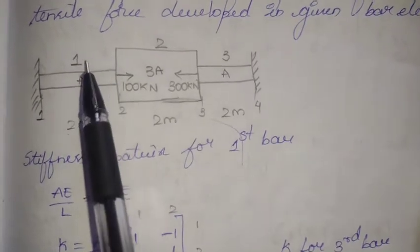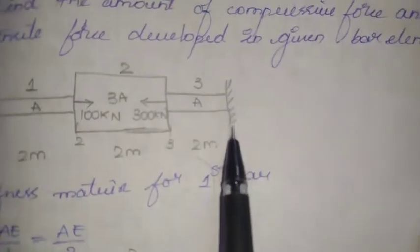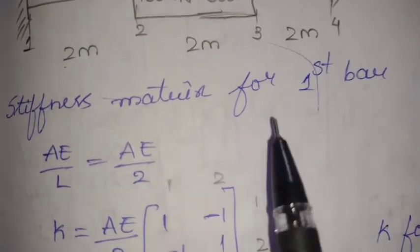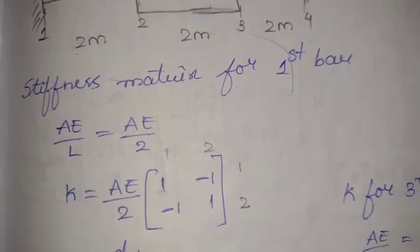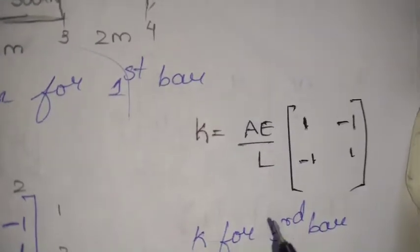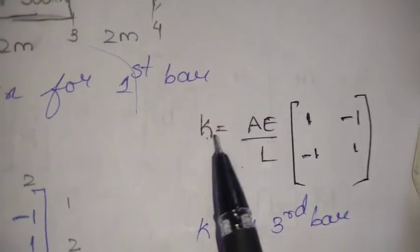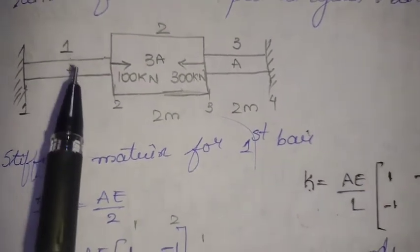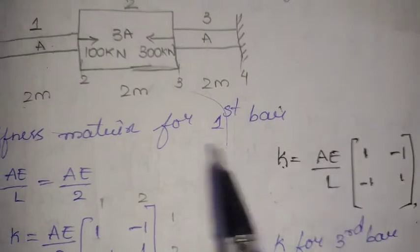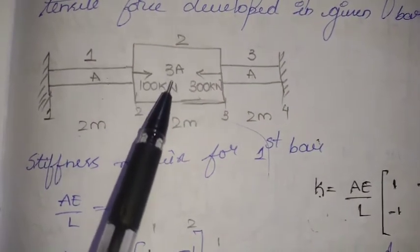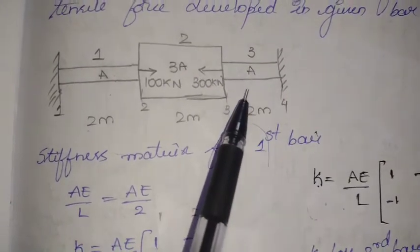In this example we are going to solve using the direct element method, we will be using the stiffness matrix. We divide the whole element into three bars: bar one, bar two, and bar three. The stiffness matrix formula for a bar element is given. For the first element, area A is equal to A; for the second element it is 3A; and for the third element it is A, where A is the cross-sectional area.